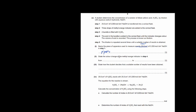State the color change of the methyl orange indicator in step 4. The conical flask contains NaOH, so in alkaline conditions the methyl orange would be yellow. As you add more H2SO4 and the solution is neutralized, it will turn orange.